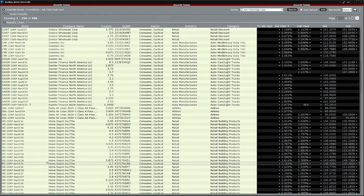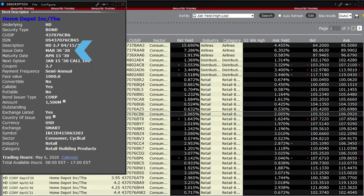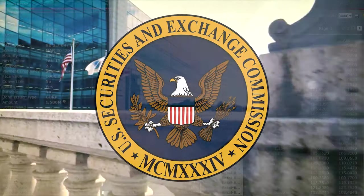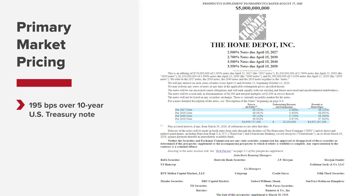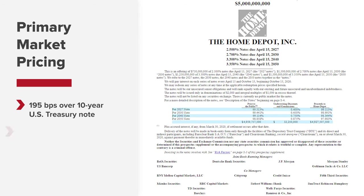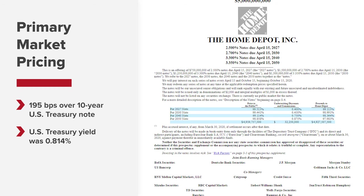We can see if we double-click on this bond that it was issued on March 30, 2020, and according to the company's filing with the SEC, that it was sold at 195 basis points spread over the on-the-run 10-year U.S. Treasury note yield, which at the time was 0.814%.